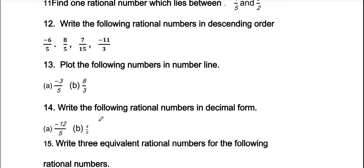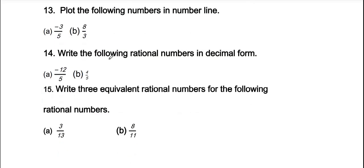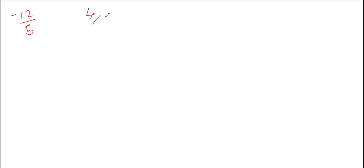The 14th question is about expressing rational numbers in decimal form. We are converting rational numbers to decimal form. It is very easy. For example: minus 12/5 and 4/5. Instead of using the long division method which is time-consuming, convert the denominator to 10.